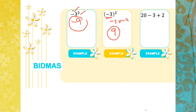Now if we have 20 - 3 + 2, according to BIDMAS, addition and subtraction are of the same precedence. So we evaluate from left to right: 20 - 3 = 17, then 17 + 2 = 19.